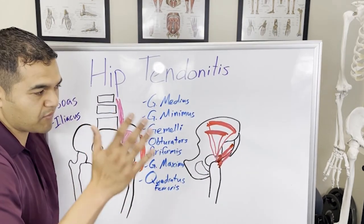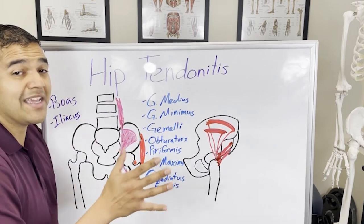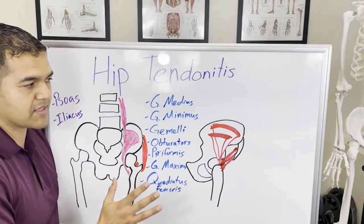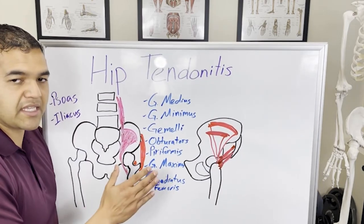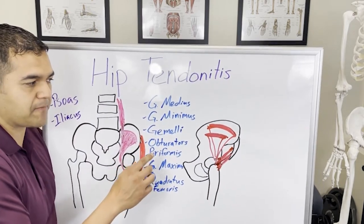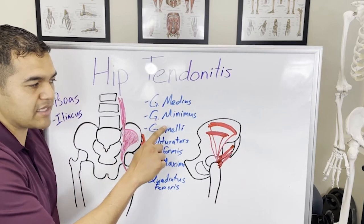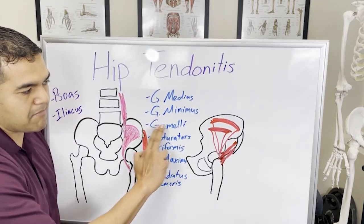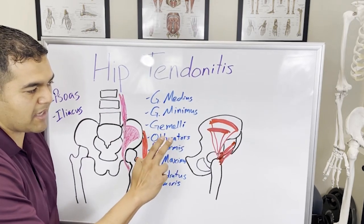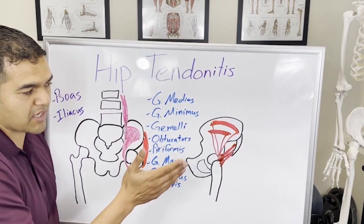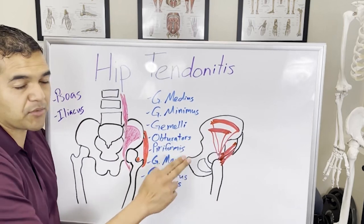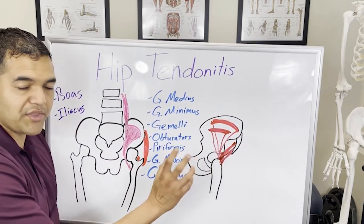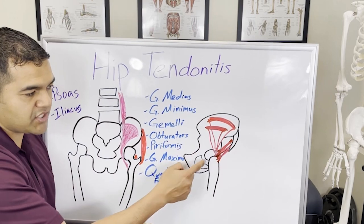There are pictures all over the internet — just Google hip muscles or hip tendonitis muscles and you'll find all the muscles I'm talking about. To give you a comprehensive list: gluteus medius, gluteus minimus, gluteus maximus, the gemelli muscles — there's a gemelli superior and inferior, so actually two gemelli — and two obturators, an internus and externus. All these help with the rotation of the hip.